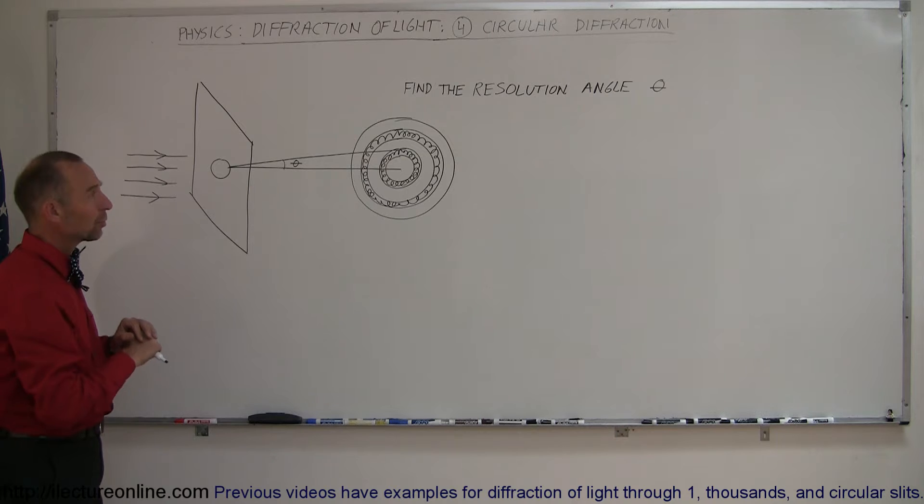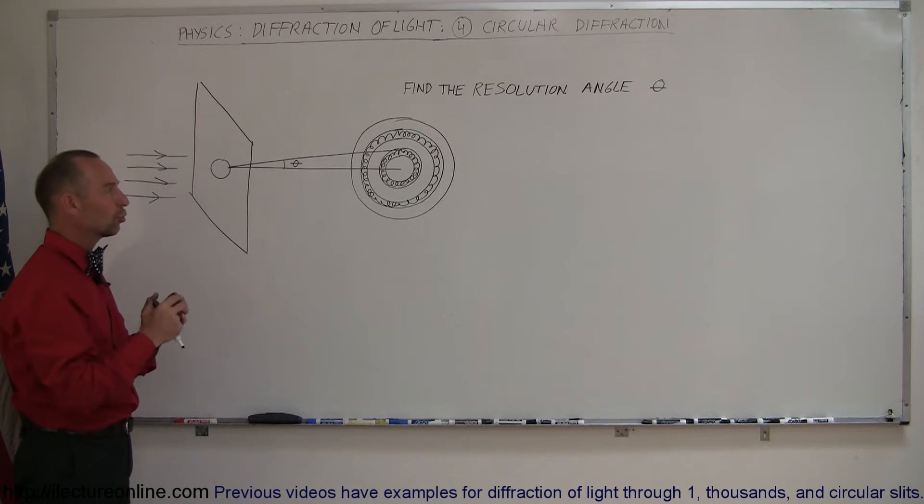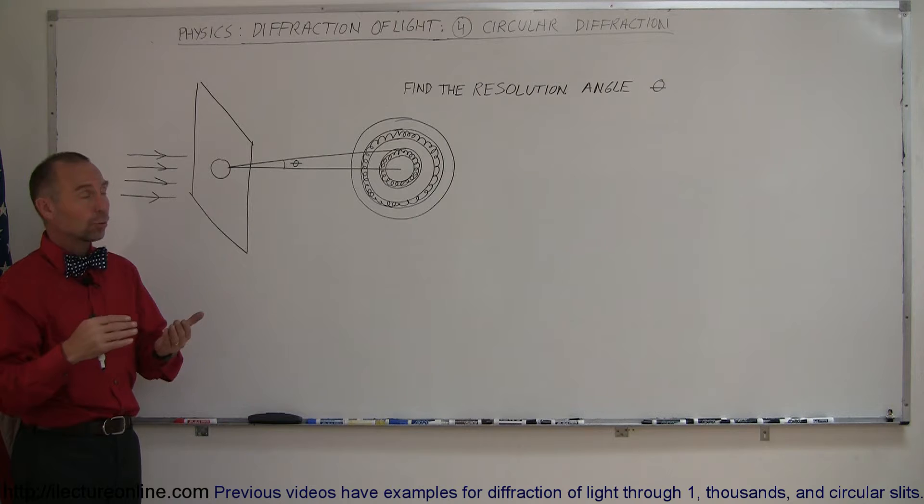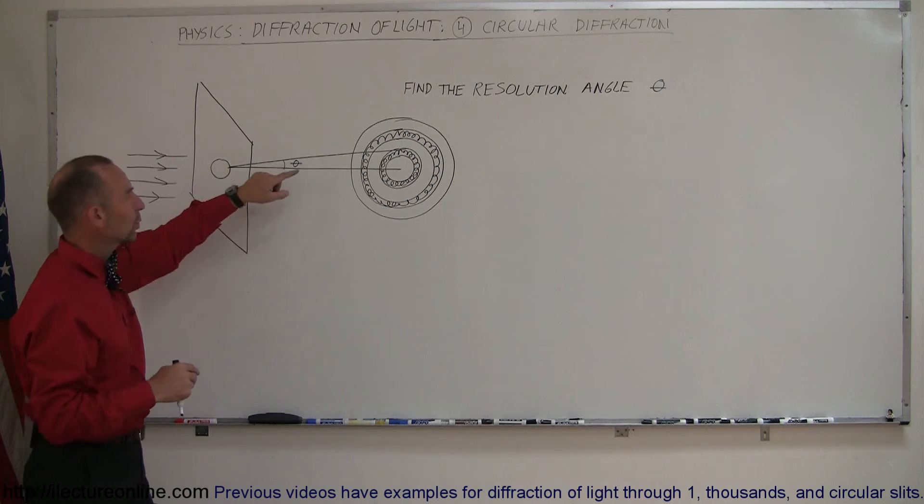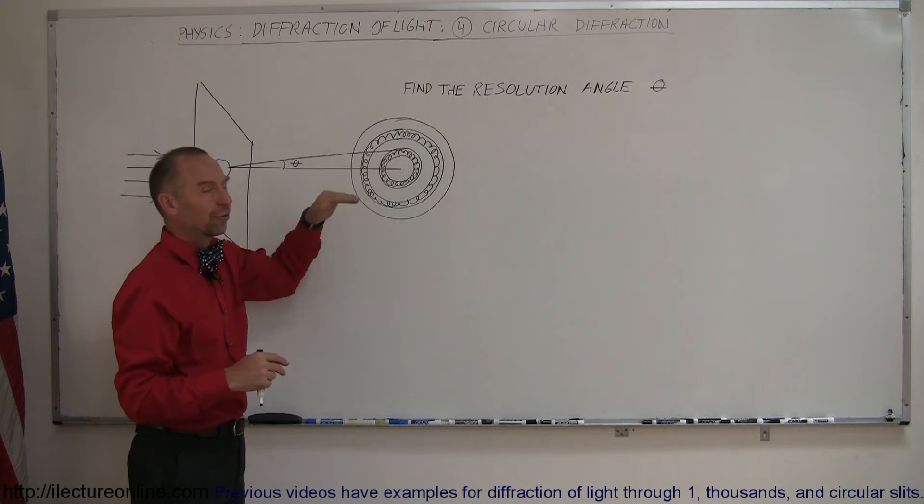What we're trying to do here is find the angle of resolution of an optical instrument, including the human eye. In other words, we're trying to find the angle between the central maximum and the first dark fringe.